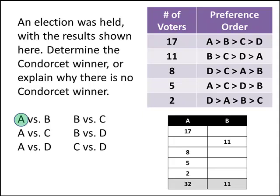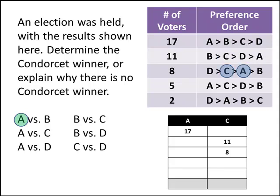Next is A versus C. In the first row, those 17 voters like A more than C, so those votes go to A. In the next row, those 11 voters like C better than A, so they vote for C. In the next row, those 8 voters like C better than A. Then 5 voters vote for A, and 2 more vote for A. Adding up, A gets 24 votes and C gets 19 votes — A wins the one-on-one matchup again.